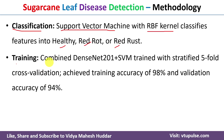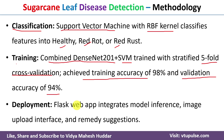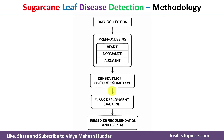The model is trained by combining DenseNet201 and SVM. After training, the model is tested using five-fold cross-validation. We achieved a training accuracy of 98% and a validation accuracy of 94%. Finally, the model is deployed using a Flask web app, where users upload an image, click predict, and receive the disease name along with suggested remedies.